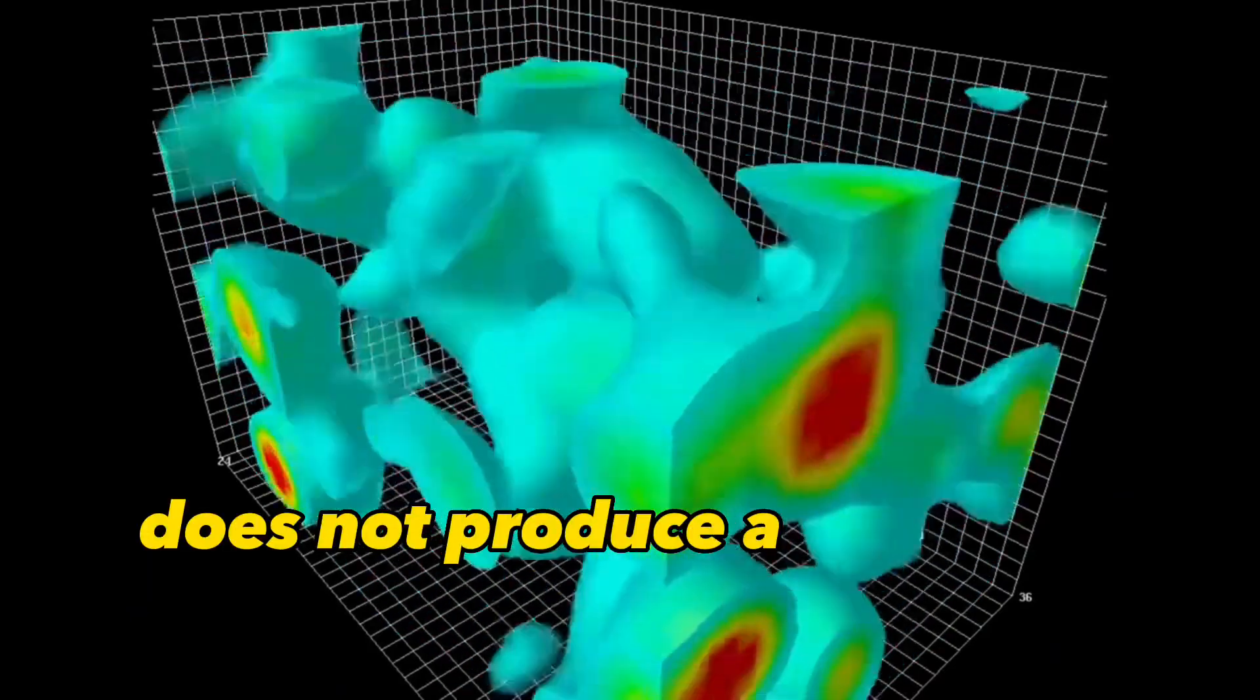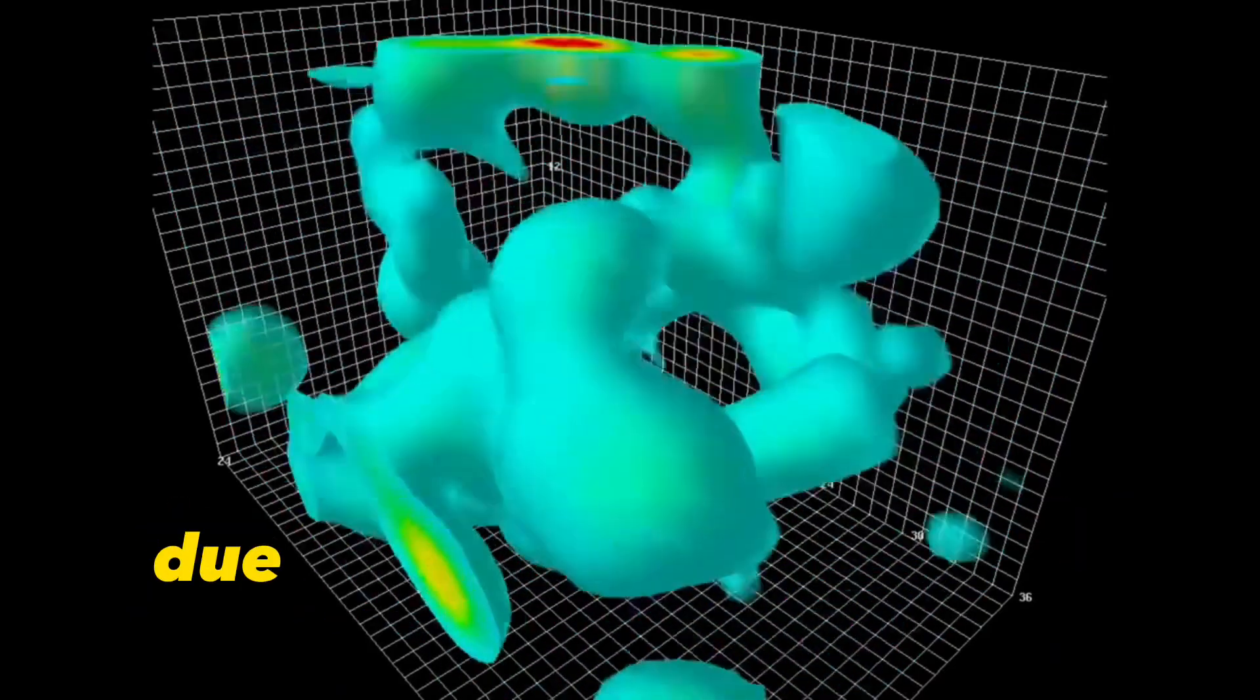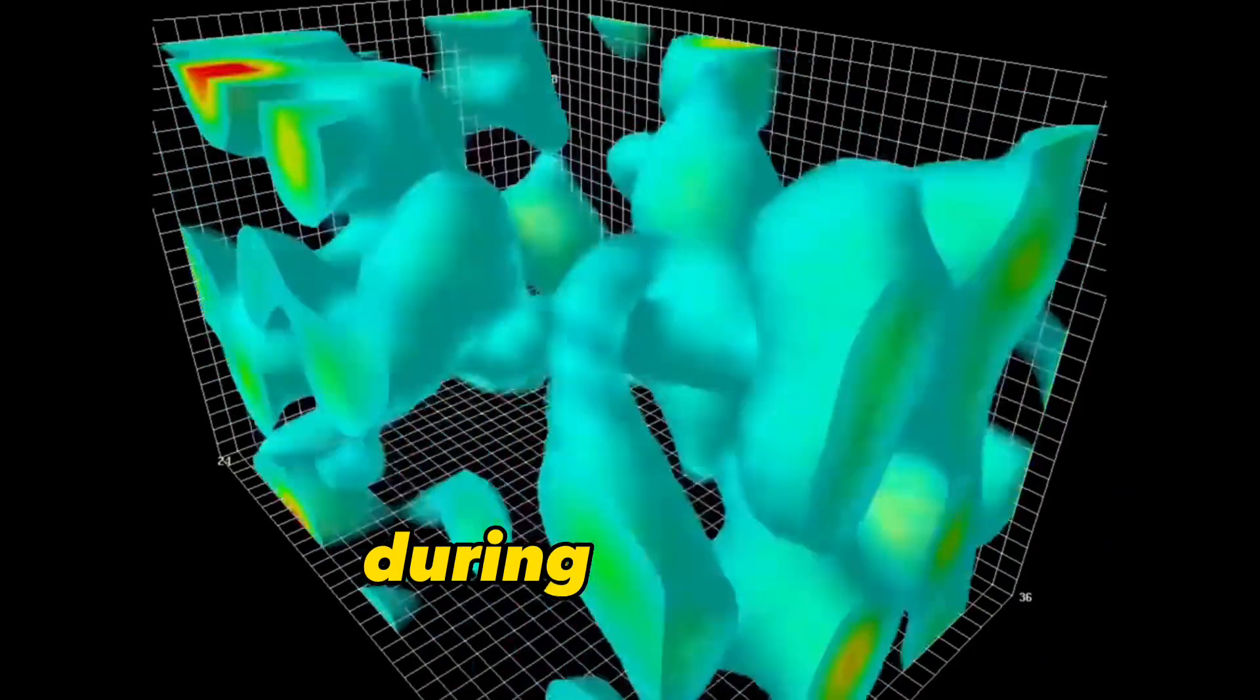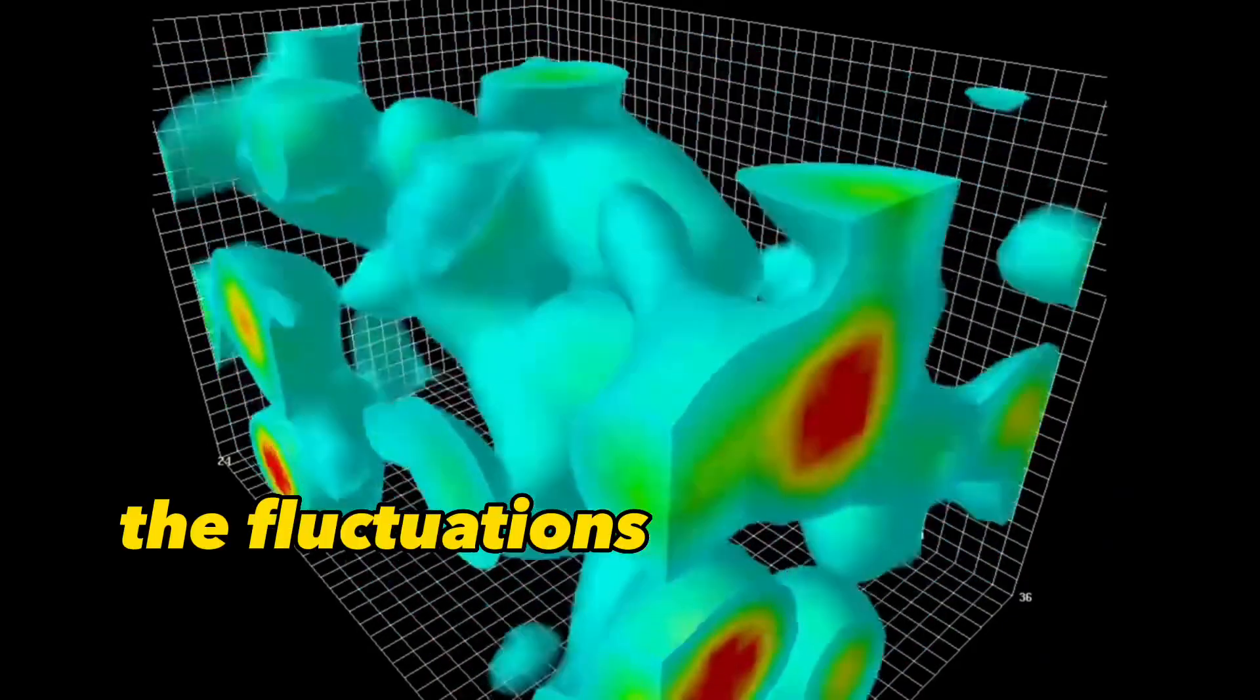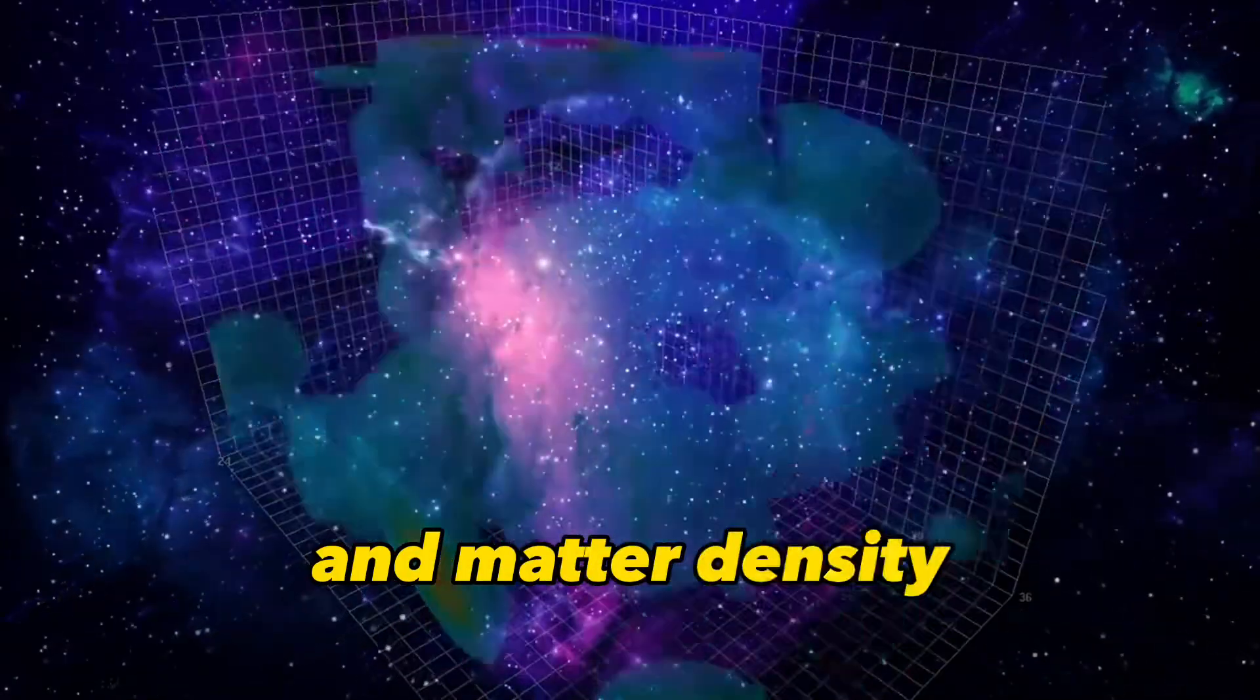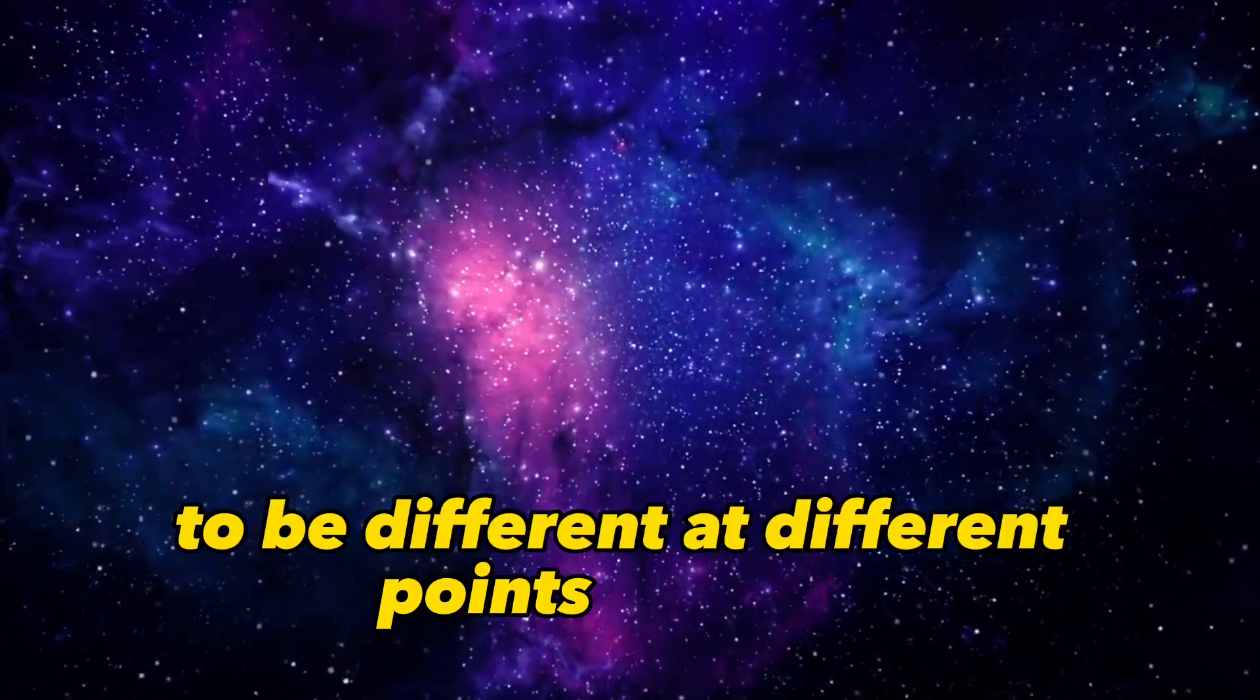New inflation does not produce a perfectly symmetric universe due to quantum fluctuations during inflation. The fluctuations may cause the energy and matter density to be different at different points in space.